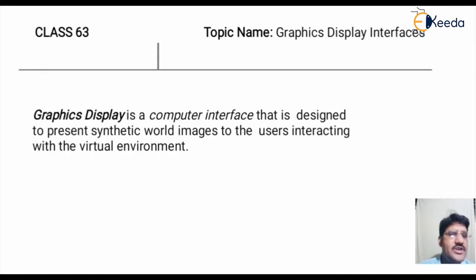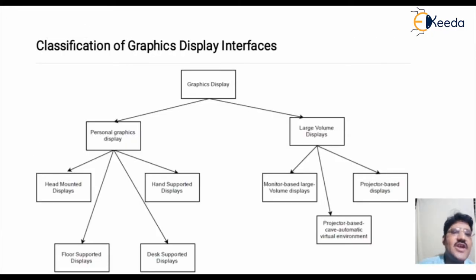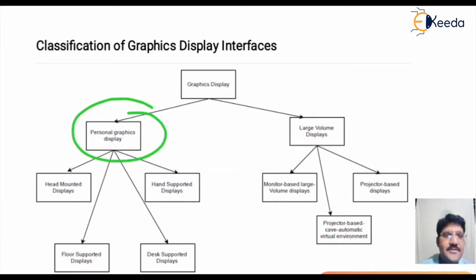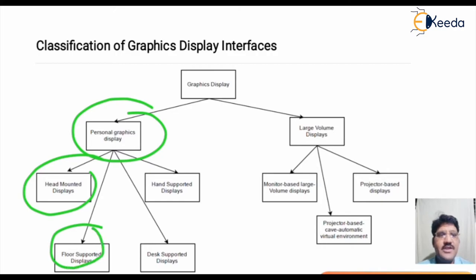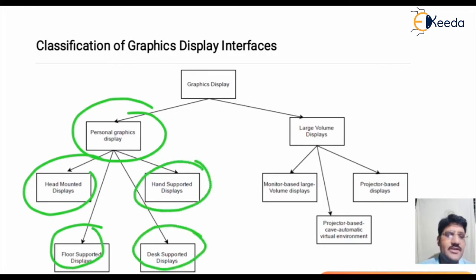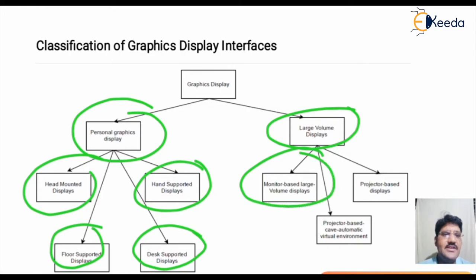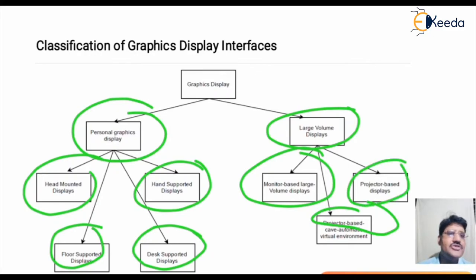A graphic display is a computer interface that is designed to present synthetic world images to the user interacting with a virtual environment. The graphic display devices or interfaces can be broadly classified in two categories. The first one is personal graphics display, which can further be classified into head mounted display, floor supported display, desk supported display, and hand supported display. The second category is large volume display, which can be further classified into monitor-based large volume display, projector-based CAVE automatic virtual environment, and projector-based display.